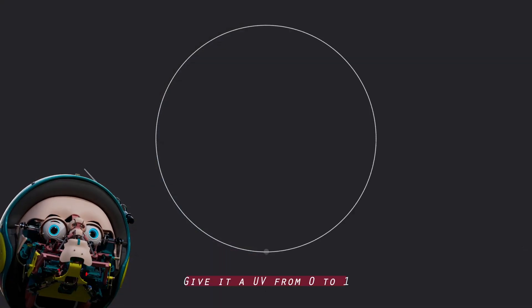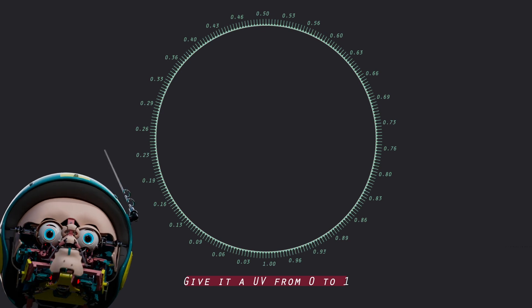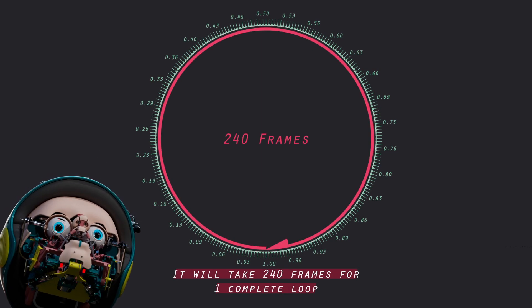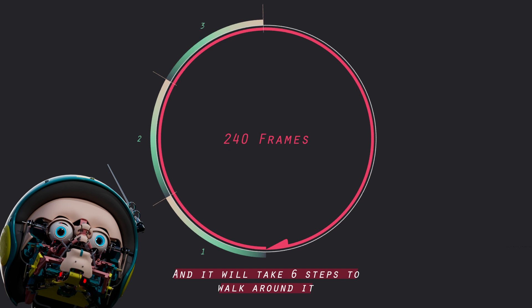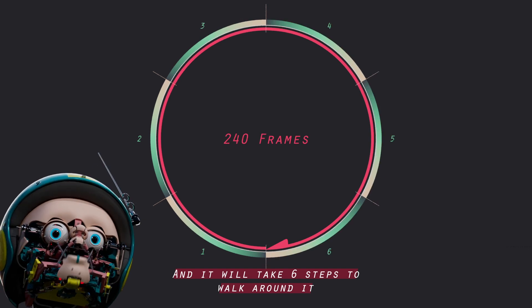Grab a circle. Give it a UV from 0 to 1. It will take 240 frames for one complete loop, and it will take 6 steps to walk around it.